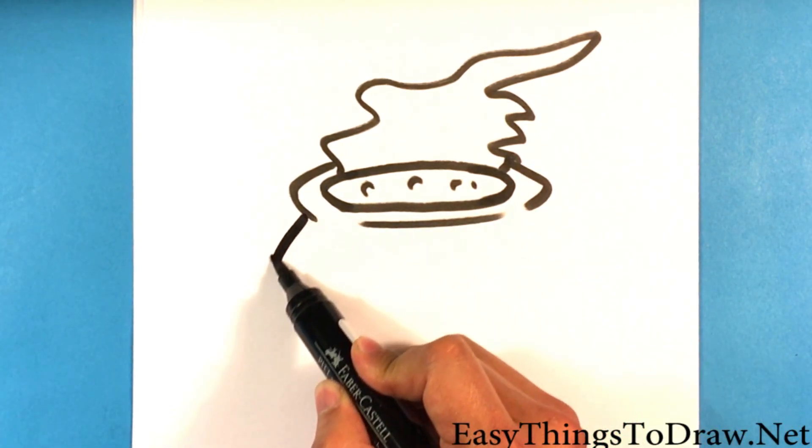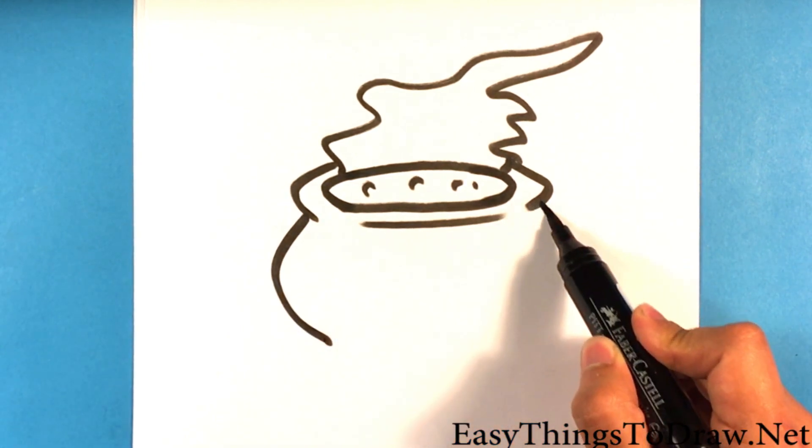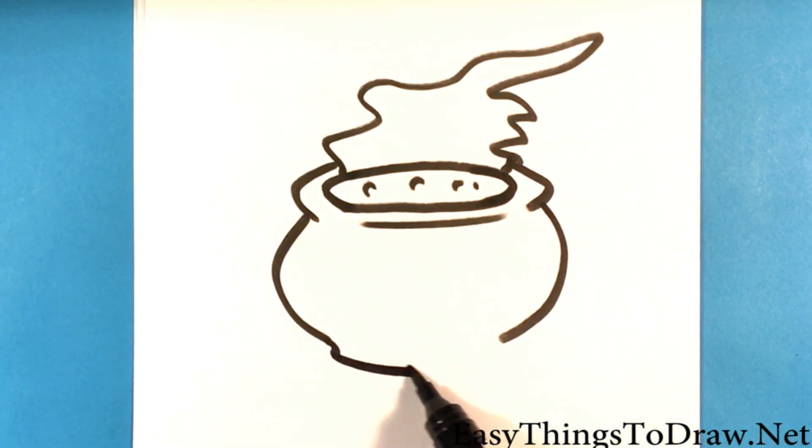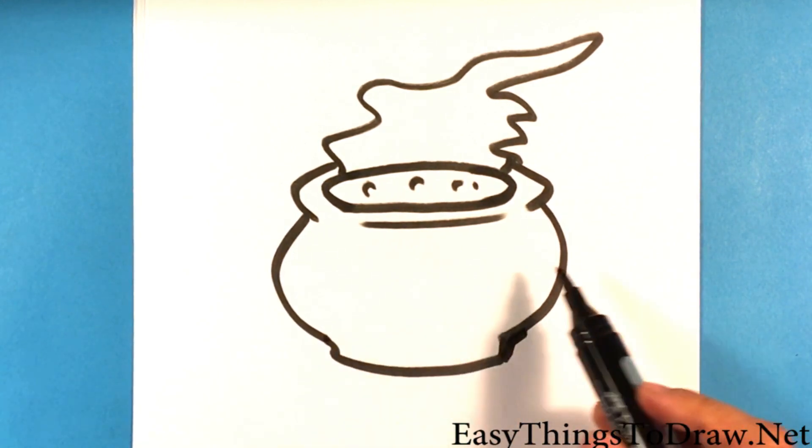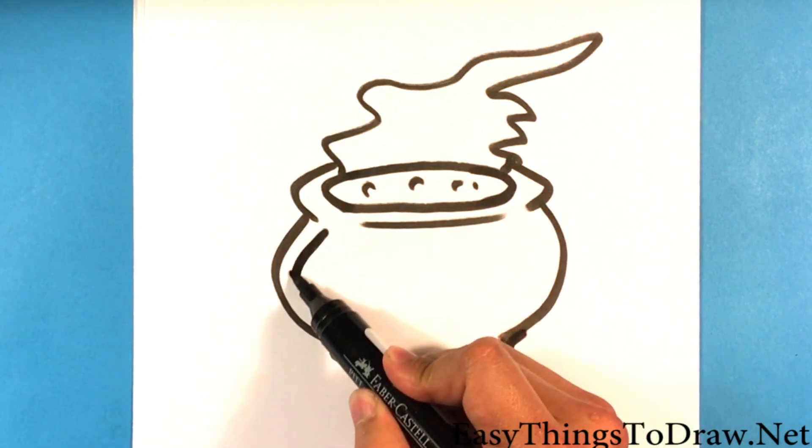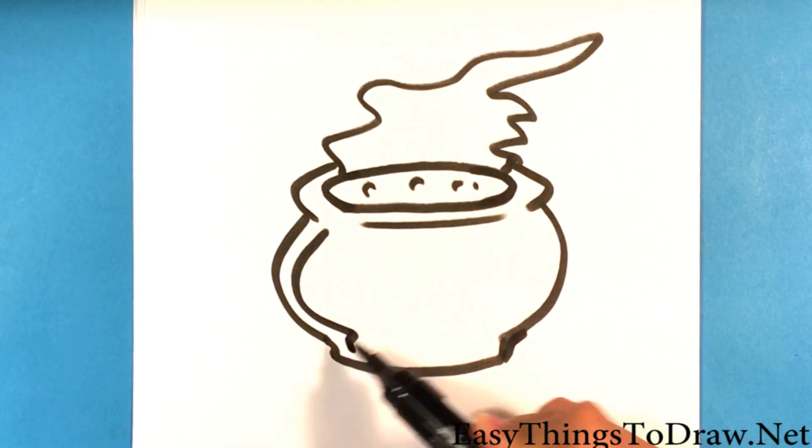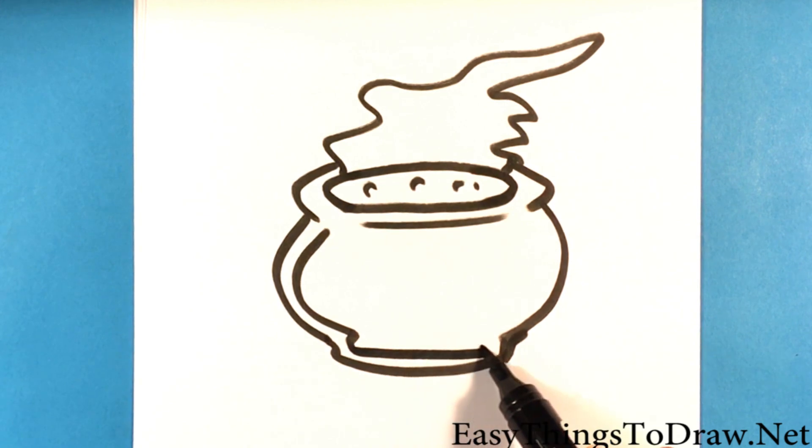Then what I'm gonna do is I'm gonna go downward and draw a large version of that, come down as well. I'm gonna draw out kind of an outer layer on that.